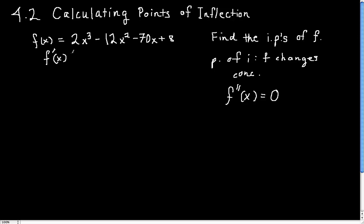And what is this? We can differentiate this using the power rule. So we get 6x squared minus 24x minus 70.